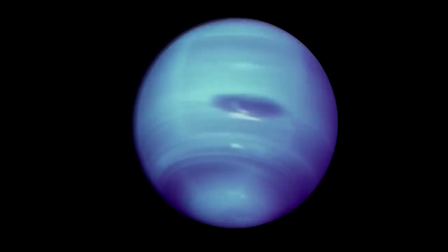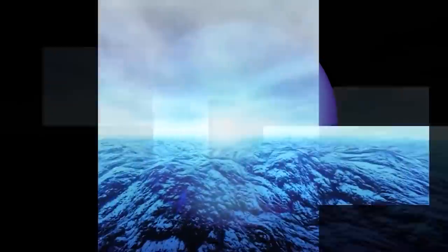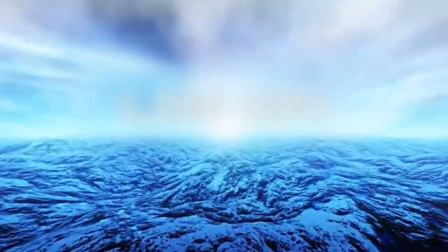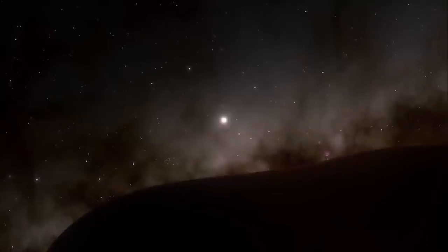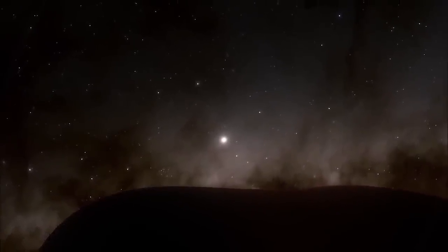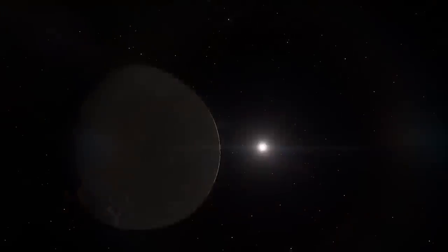Neptune is 4 times larger than the Earth, and 17 times heavier. Neptune's winds, the fastest in the solar system, can reach speeds of over 2,000 kilometers per hour, or 1,200 miles per hour.